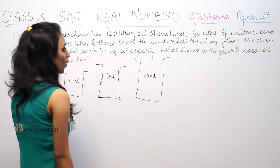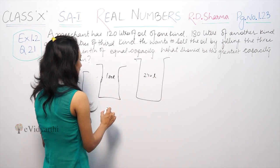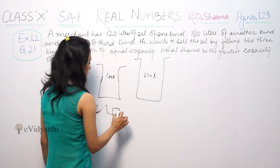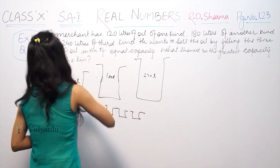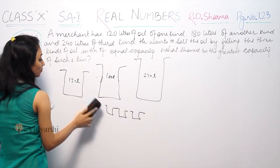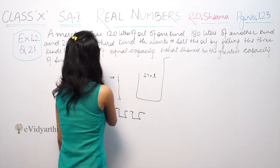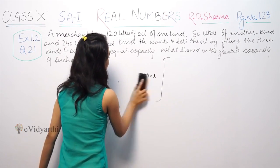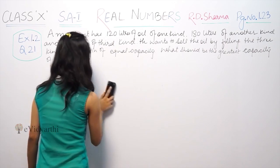Now we want to sell the oil by filling the three kinds of oil in tins of equal capacity. What should be the greatest capacity of such a tin? The greatest capacity means maximum, highest. That means we need to find the HCF.